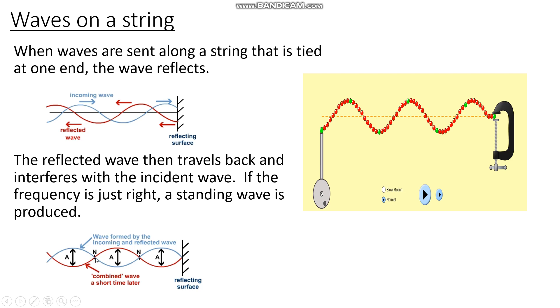The ends are what we call nodes, and at these nodes here, the string doesn't appear to move. The opposite of a node is an anti-node, so you've got one here and here. That's where the string is vibrating at its maximum. Okay, remember this pattern is all caused by these two waves up here, the incoming and reflected waves, interfering with one another.